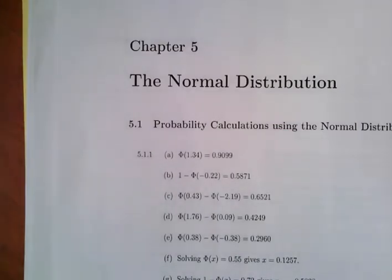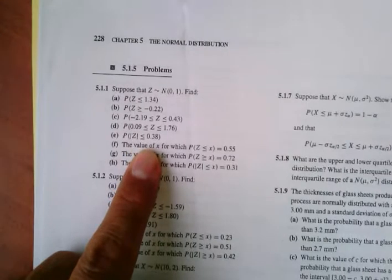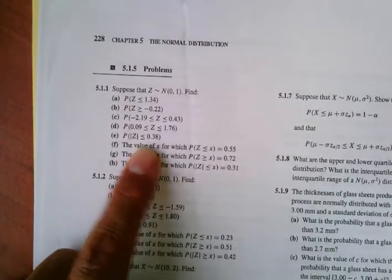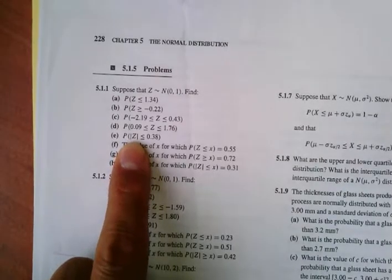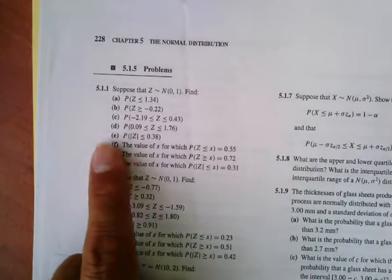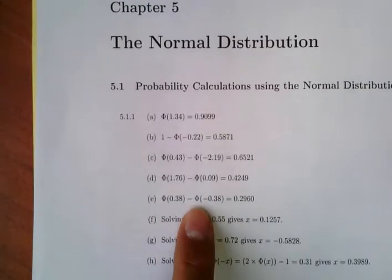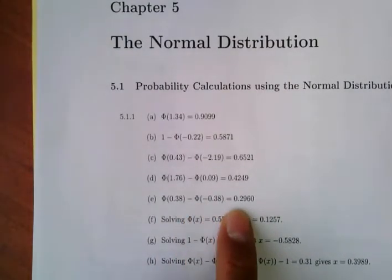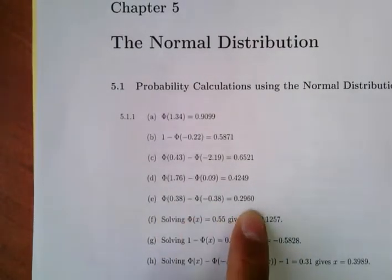For question E, we have an absolute value expression. When we solve the absolute value, we convert it to the interval from negative 0.38 to positive 0.38. Once it becomes an interval, we find the phi values in the table and subtract them to get the probability.